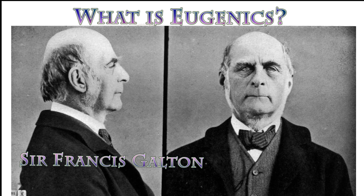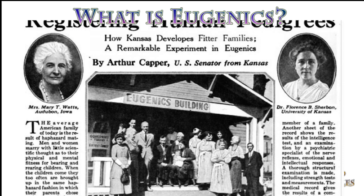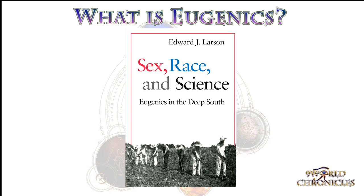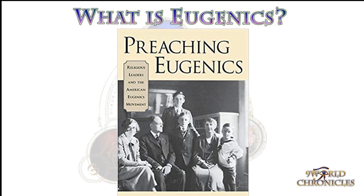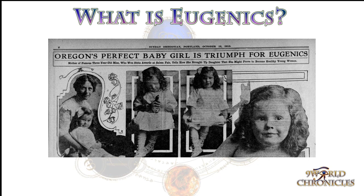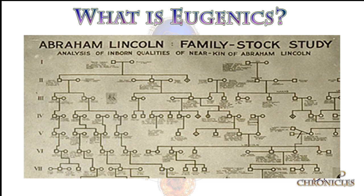Early advocates of eugenics considered it a viable way to improve the populace. In modern usage, the term eugenics has very close ties to scientific racism and modern white supremacy. In the early 20th century, it emerged in the United Kingdom and spread to other countries, including the United States, Canada, and for a large degree most European countries — some form of eugenics at some time.